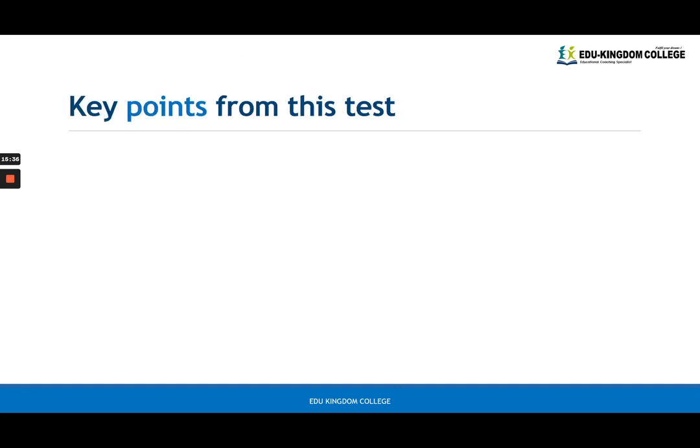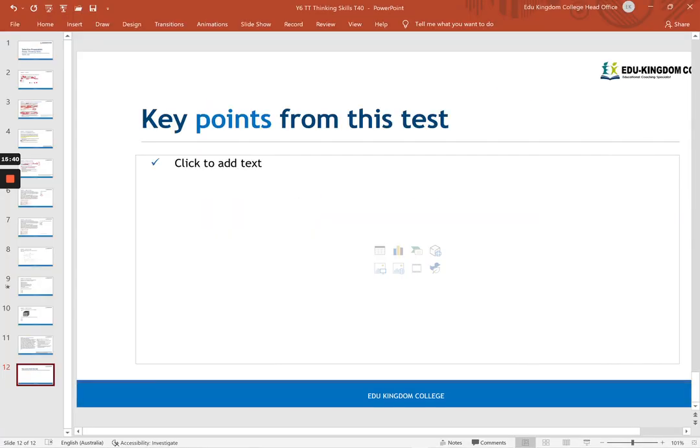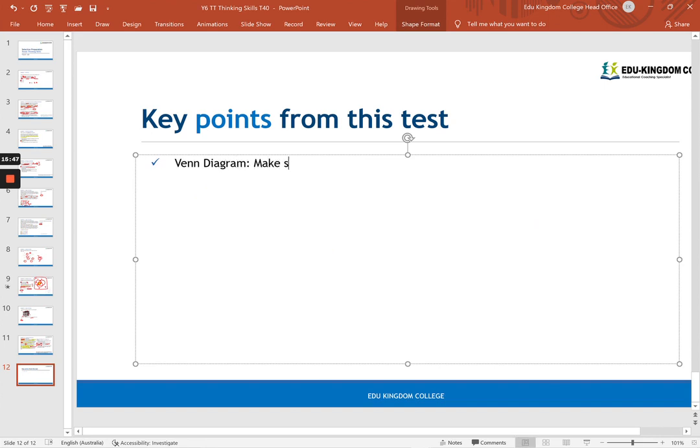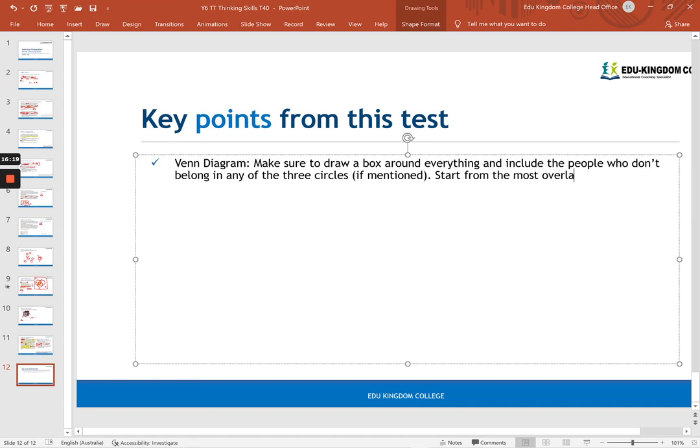Some key points from this test I want to talk about. First, the Venn diagram. I want you to make sure to draw a box around everything and include the people who don't belong in any of the three circles, if mentioned. So sometimes they mention it and sometimes you have to figure it out by minusing it from the total.